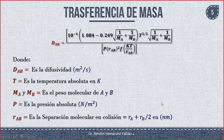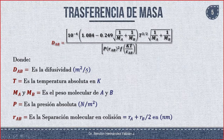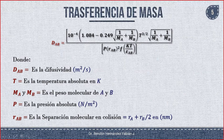No hagas conversiones que no sean pertinentes. Las unidades que deben tener todas estas variables son las indicadas para que el resultado dé metros cuadrados por segundo. Si aquí está en nanómetros, déjalo en nanómetros. Si aquí está en pascales, déjalo en pascales. Esas son las variables y sus unidades correspondientes de esta ecuación empírica.